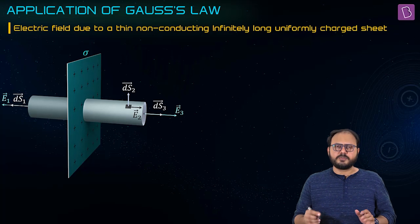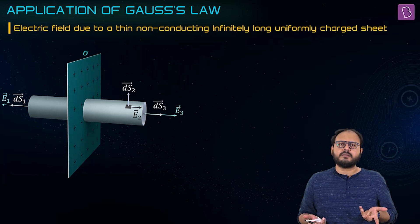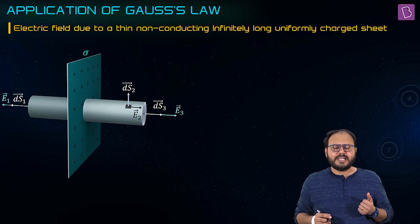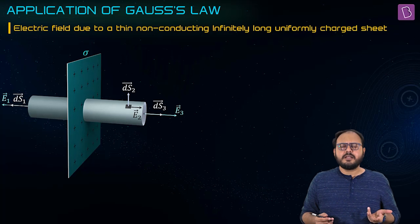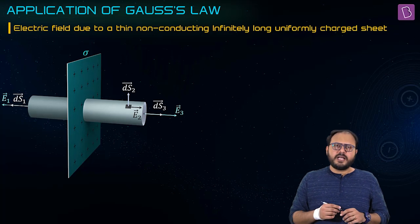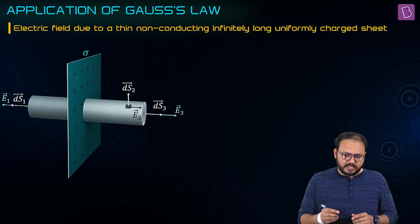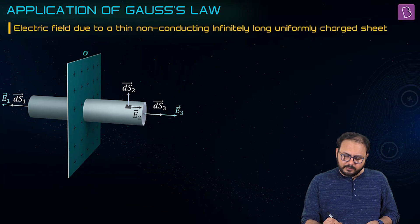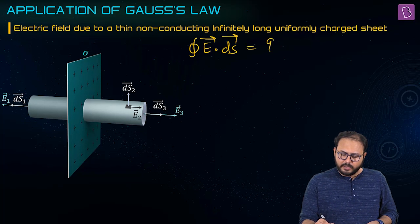Non-conducting, infinitely long, uniform charges — we have done the entire hard work already. Take a pill box, take a cylinder. We have taken the cylinder. There are three surfaces: left end, curved, and the right end — surface one, surface two, surface three. Apply Gauss's law: E·ds = Q_enclosed / ε₀, and that's finite.